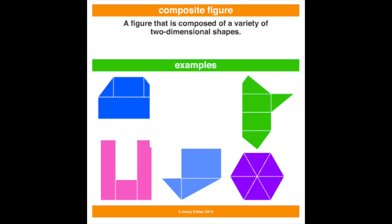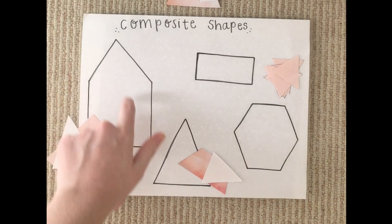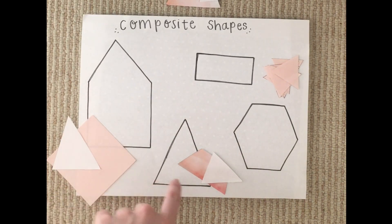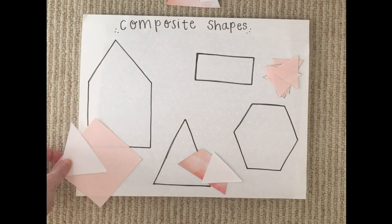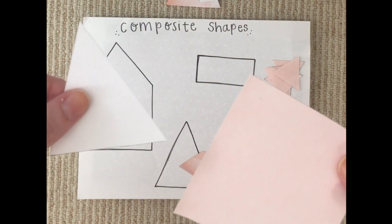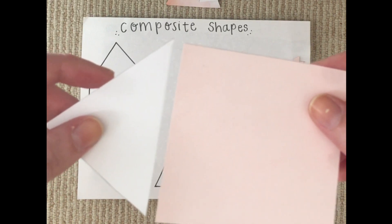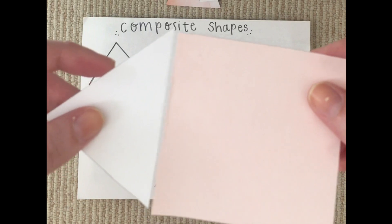Next we're going to play a little composite shape game together, where we look at how shapes can fit together to form composite shapes, and then at the end there will be an exit ticket for you to create your own composite shape. When we are making composite shapes, we want to make sure that there are no overlaps or no gaps between our shapes. For it to be a composite shape, they have to be touching so that we can see the whole shape and each individual one.